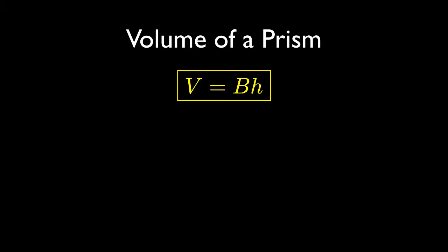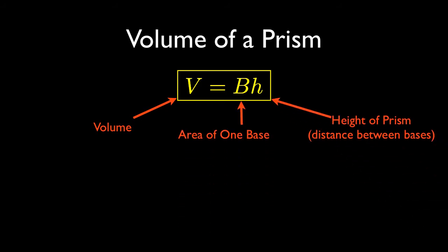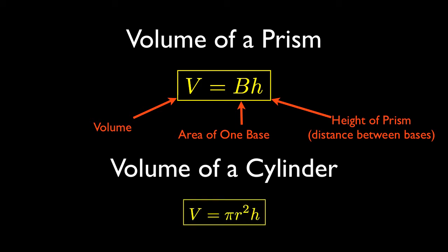First, recall the volume of a prism was the area of one base times the height of the prism. Likewise, the volume of a cylinder is pi r squared times height.